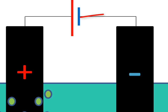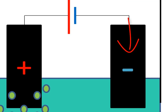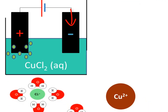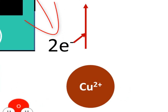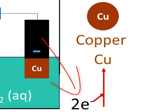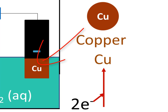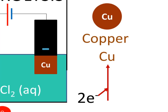The negative terminal of the battery then pumps these electrons to the negative electrode. There, the Cu2+ ions are forced to accept those electrons, and that changes the Cu2+ ions into neutral Cu atoms. Those neutral Cu atoms precipitate out of solution because they're solid, and they precipitate on the negative electrode. It's that copper which increases the mass of the electrode on which it's deposited, and we can see that's happening at the negative electrode.